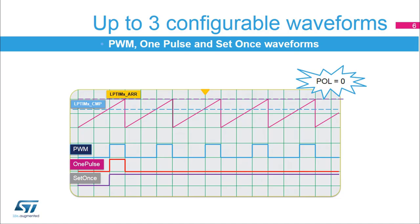If the last output state is the same as the one at the waveform's beginning, then one pulse mode is configured. If not, then set once mode is configured. The Low Power Timer's output polarity is controlled through the WAVEPOL bit field in the LPTIMX_CFGR register.